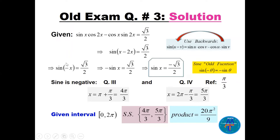Since sine is an odd function, sin(−x) = −sin x. So we get −sin x = √3/2, which means sin x = −√3/2. Sine is negative in quadrants 3 and 4. The reference angle for √3/2 is π/3 (60°). In quadrant 3: π + π/3 = 4π/3. In quadrant 4: 2π − π/3 = 5π/3. The product of solutions is 4π/3 · 5π/3 = 20π²/9.